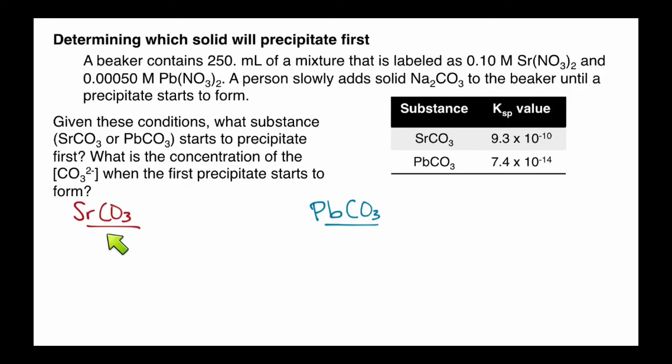So we've got to write out our Ksp expression and solve for the concentrations of carbonate ions that will cause us to reach the Ksp value. And remember, we can do this because the Ksp value tells us the product of the concentrations whenever we're at full saturation. In other words, at the point whenever if we added any more at all, it would start to precipitate out.